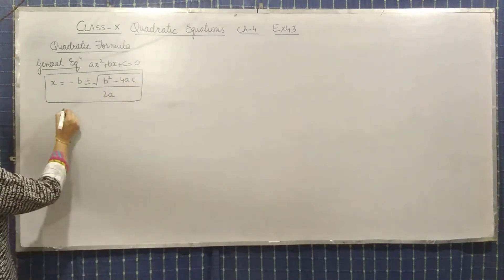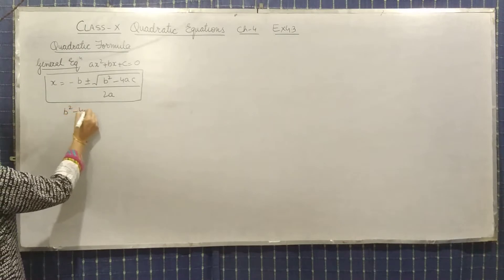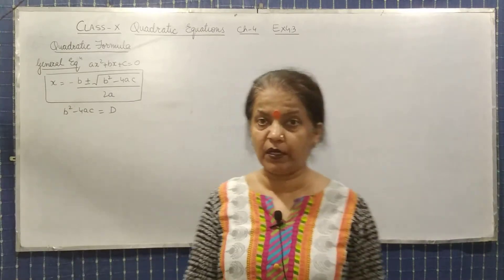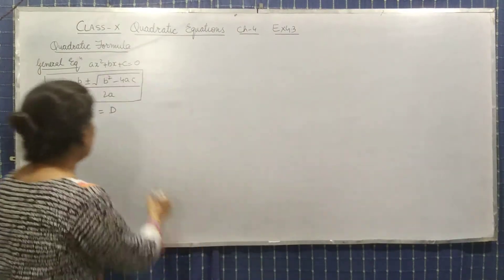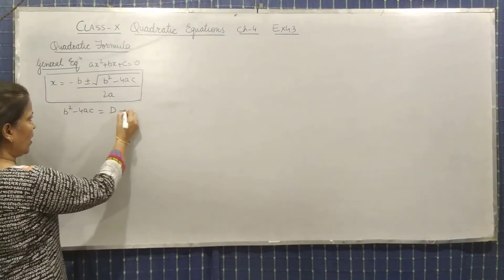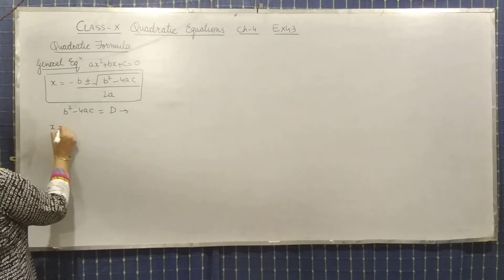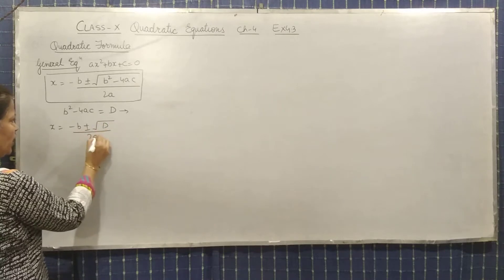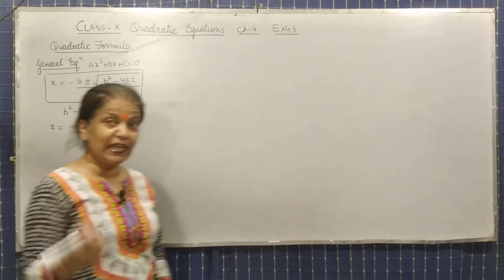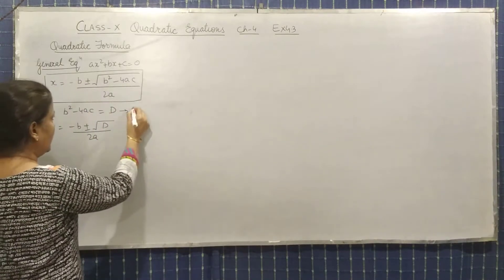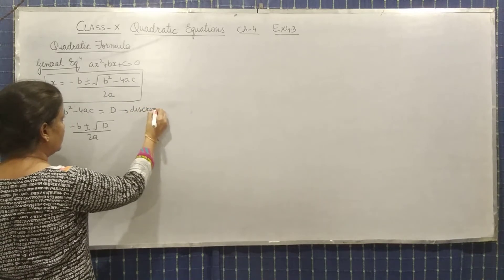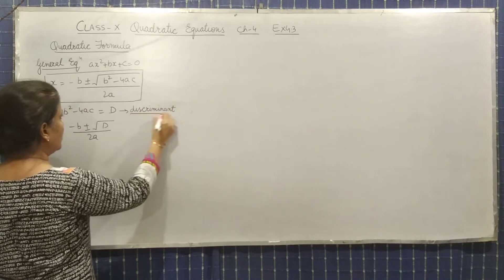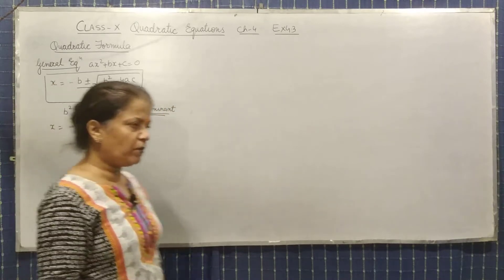Here, b² − 4ac is also called D — capital D. Instead of writing b² − 4ac, you can write: x = (−b ± √D) / 2a. This D is called the discriminant. So we can also write it in short form.